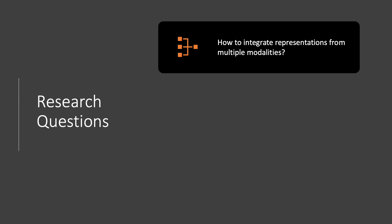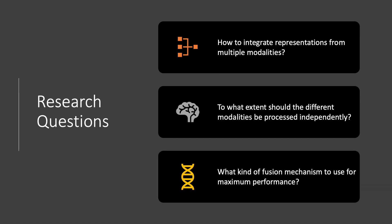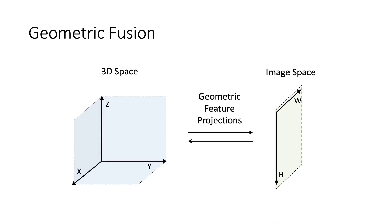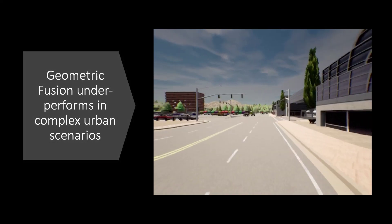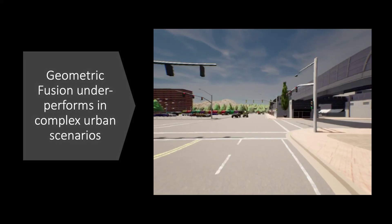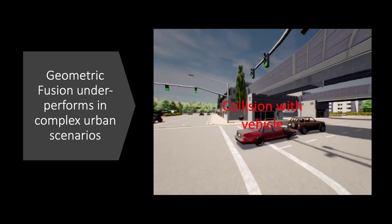This leads to several research questions: How to integrate representations from multiple modalities? To what extent should the different modalities be processed independently? And what kind of fusion mechanism to use for maximum performance? Prior literature on sensor fusion is mostly focused on using geometric feature projections from 3D space to image space and vice versa. We observe that geometric fusion underperforms in complex scenarios involving dense traffic, resulting in collision with other dynamic agents in the scene.